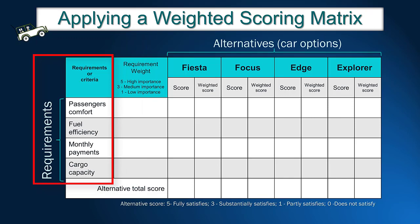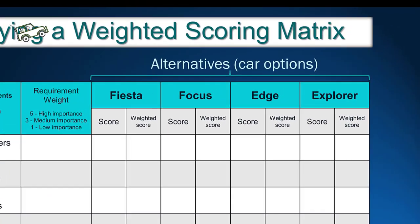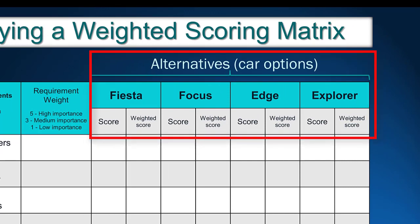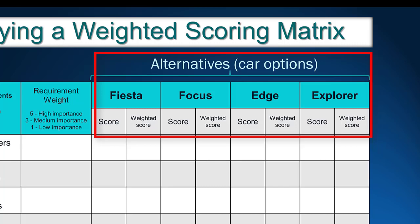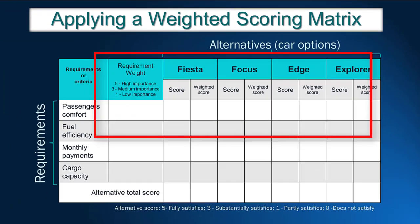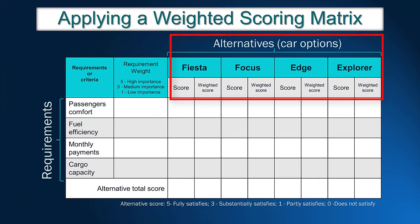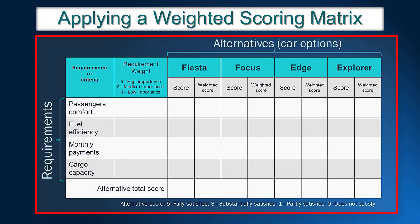Secondly, we need to identify alternatives — in this case, the car models John can buy. To be more illustrative, we decided to present alternatives manufactured by Ford company. The four models are Fiesta, Focus, Edge, and Explorer. Fiesta is the smallest, cheapest, and most fuel-efficient car. On the other side, we included the Ford Explorer, a large utility vehicle. In the middle range, we have Ford Focus and Edge. Now the weighted scoring table is ready for the analysis, with requirements in the rows and alternatives in the columns.